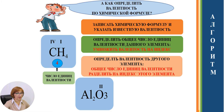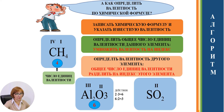Ещё пример разберем. Al2O3: валентность кислорода постоянная и равна 2. Умножаем 2 на 3, получаем число единиц валентности 6. 6 делим на индекс алюминия 2 и получаем валентность алюминия, равную 3. Проверьте наши действия. Ещё пример: CO2. Валентность кислорода 2. Умножаем валентность 2 на индекс 2, получаем число единиц валентности 4. 4 делим на 1 — индекс серы. Получаем валентность серы, равную 4.